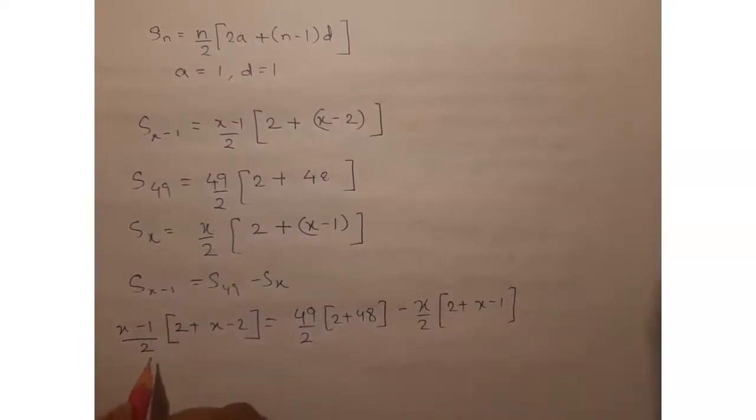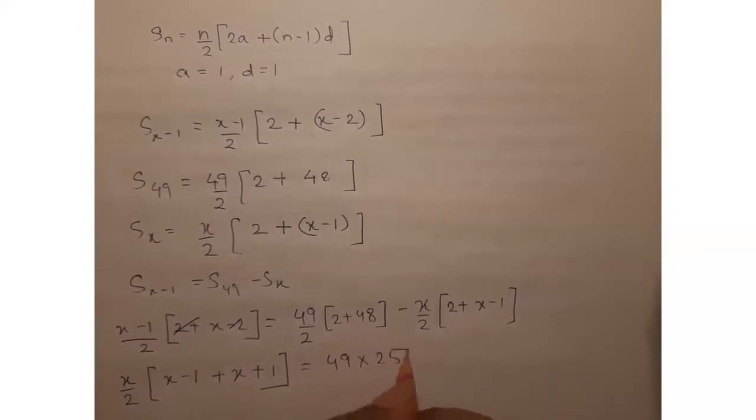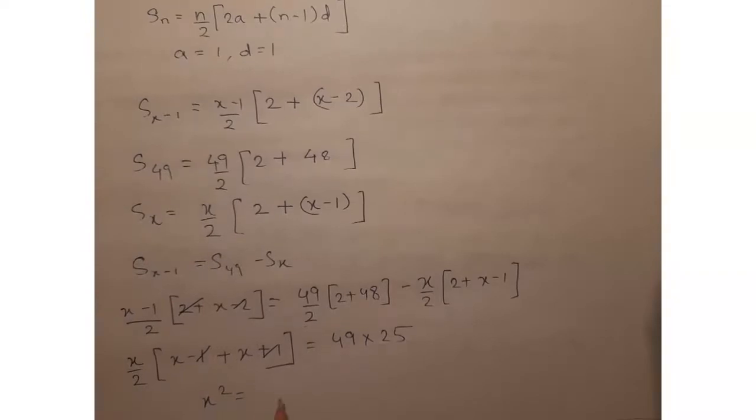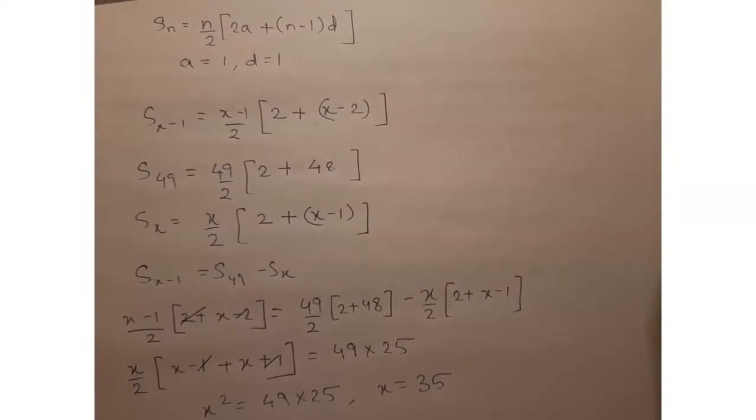So clubbing the x terms on one side, we will have x by 2 into x plus 1 plus x by 2 into x plus 1 equals 49 into 25. So this is 2x. We have x squared equals 49 into 25. Therefore x equals 7 into 5, that is 35. So the value of x which satisfies the condition is x equals 35.